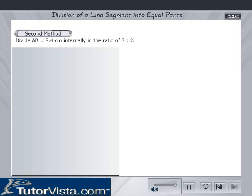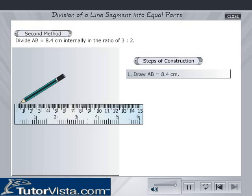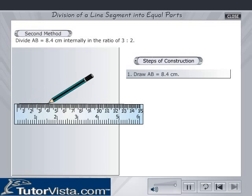Divide AB equals 8.4 cm internally in the ratio of 3 to 2. Proceed as stated in the construction. Draw AB equals 8.4 cm.